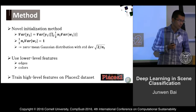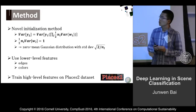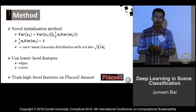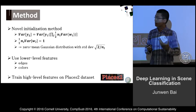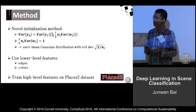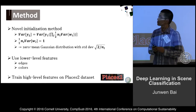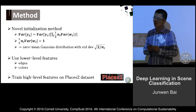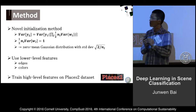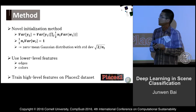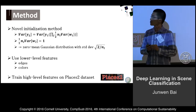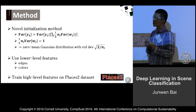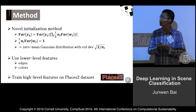Usually, weights drawn from random Gaussian distributions are used for the initialization. However, according to our experiments, such methods might fail to converge, so we adopt a new theoretically sound initialization method recently proposed by MSR researchers. Such methods perform well in our experiments.